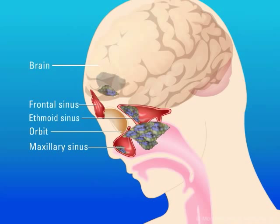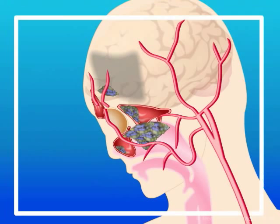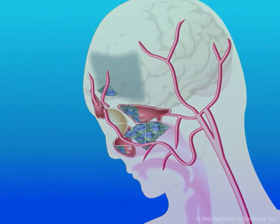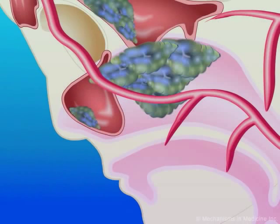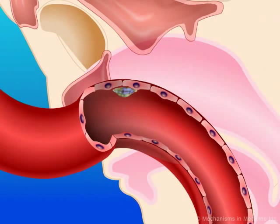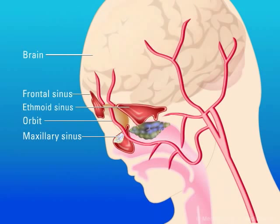This leads to life-threatening extension into the paranasal sinuses, the orbit, cranial blood vessels, and ultimately the brain. This form of disease has an extremely high morbidity and mortality and requires aggressive surgical and medical therapy.